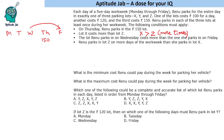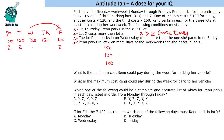The first question says: what is the minimum cost she could pay during the week for parking her vehicle? We need to minimize the cost. Let us assign 150 once, 120 once, and 100 three times. Wednesday is costlier than Friday, so we put 120 on Wednesday and 100 on Friday. X is greater than Z, and Z occurs more times — we assume Z is the 100 rupees lot on three days. All conditions are satisfied. So the minimum cost she can pay is 570.